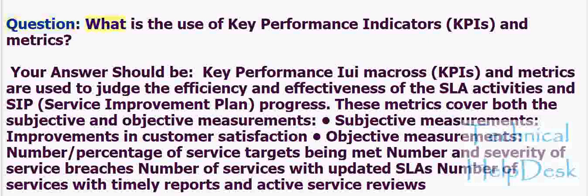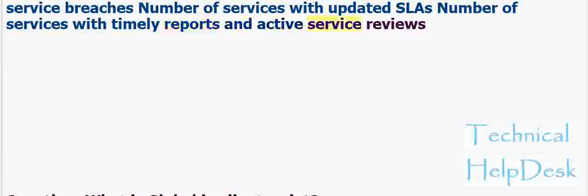Question: What is the use of Key Performance Indicators (KPIs) and metrics? Your answer should be: KPIs and metrics are used to judge the efficiency and effectiveness of SLA activities and Service Improvement Plan (SIP) progress. These metrics cover both subjective and objective measurements. Subjective: improvements in customer satisfaction. Objective: number/percentage of service targets being met, number and severity of service breaches, number of services with updated SLAs, number of services with timely reports, and active service reviews.